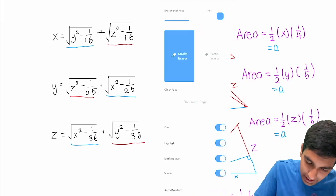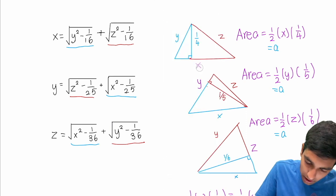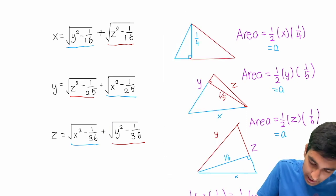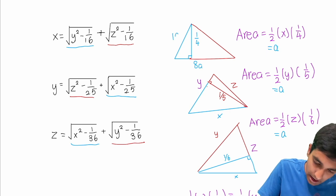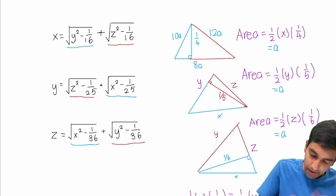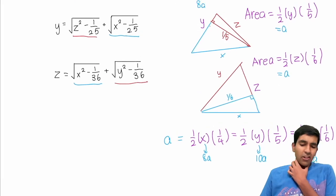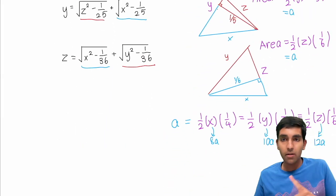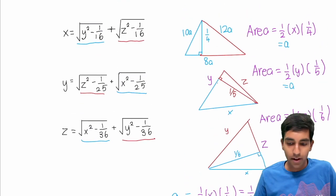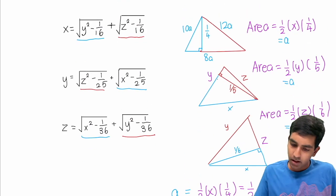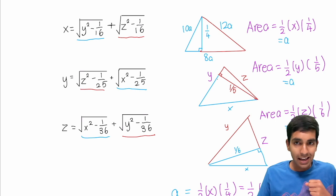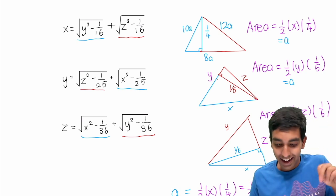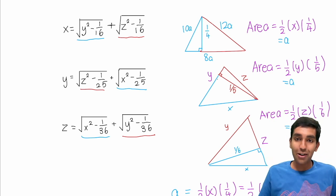So the area of this triangle is just a. Now we know x is 8a, y is 10a, z is 12a. Why deal with three variables when we can deal with one? Let's substitute 8a, 10a, and 12a in. Now all we have to do is solve for a, and the key is to find the area of the triangle a fourth way — using Heron's formula.